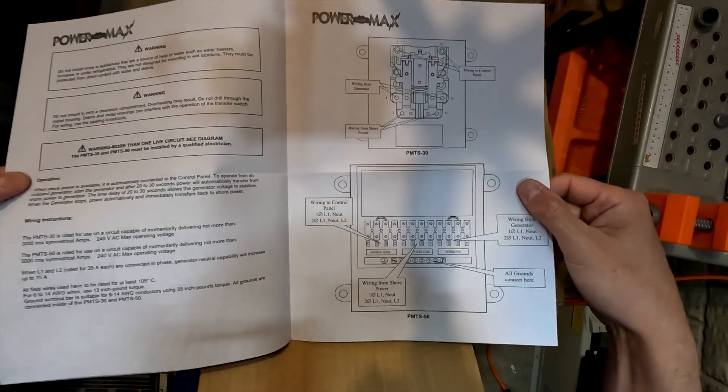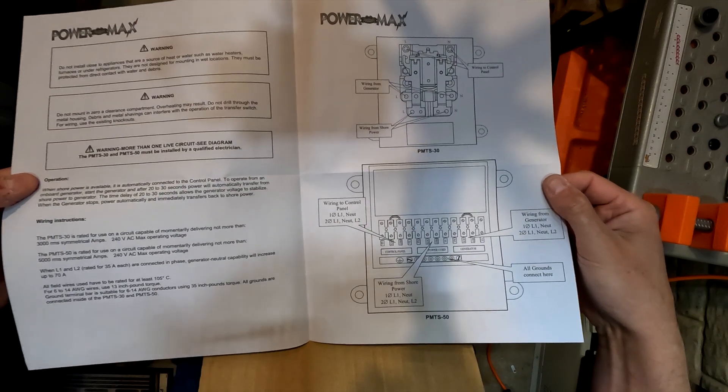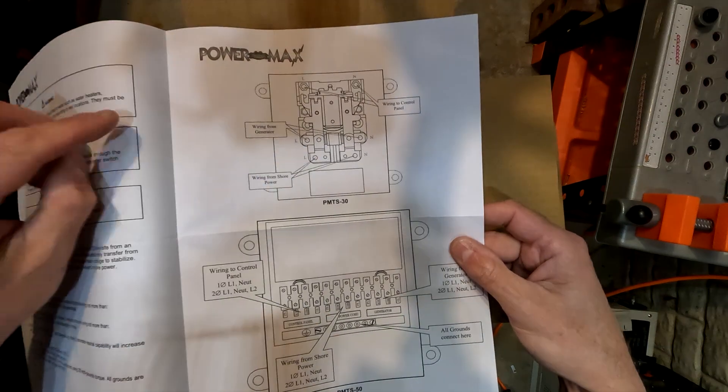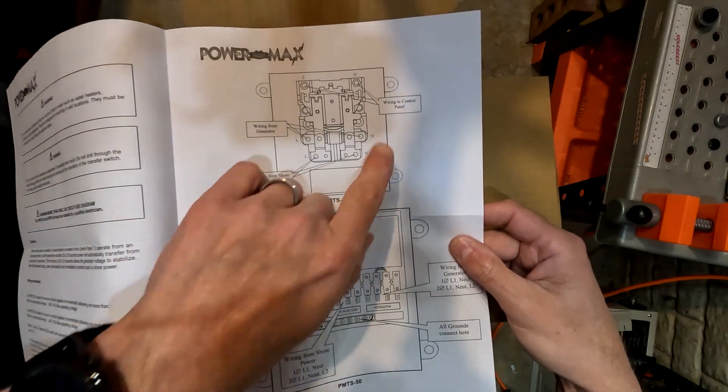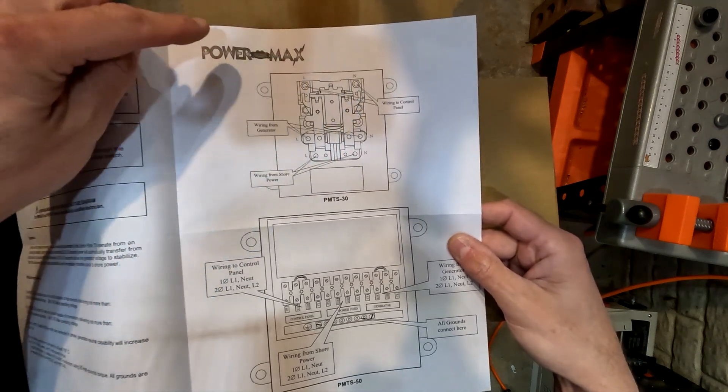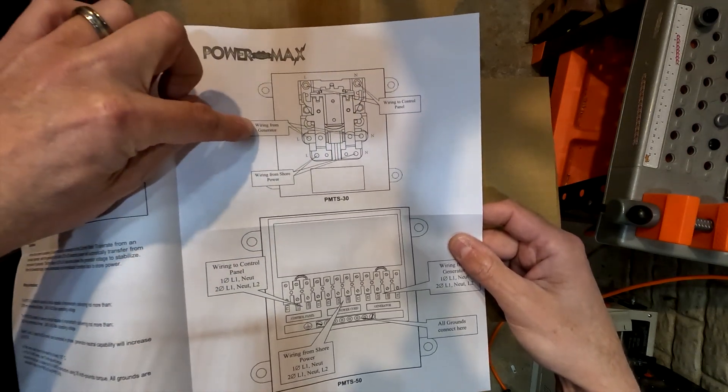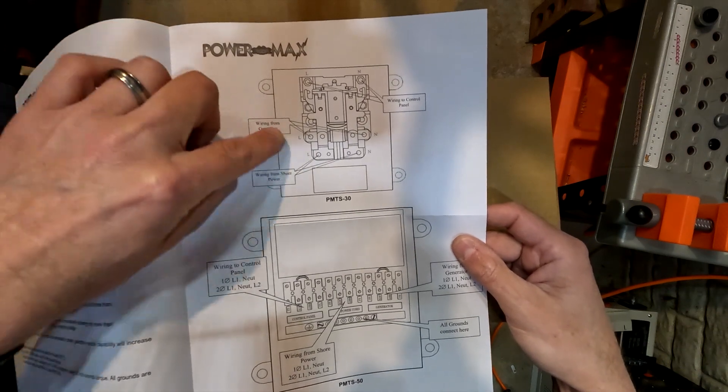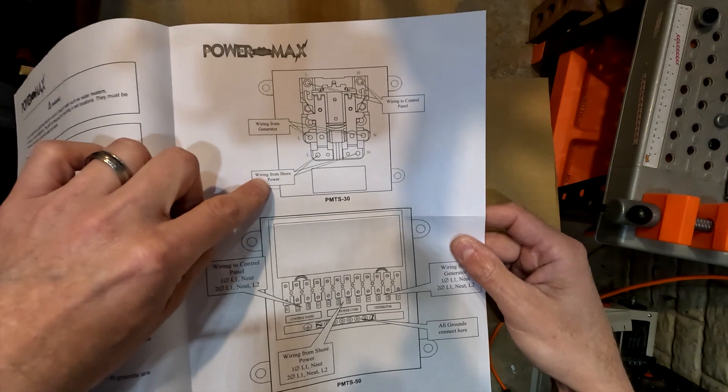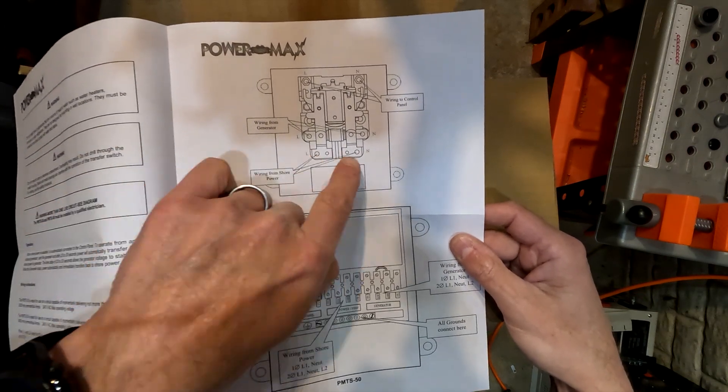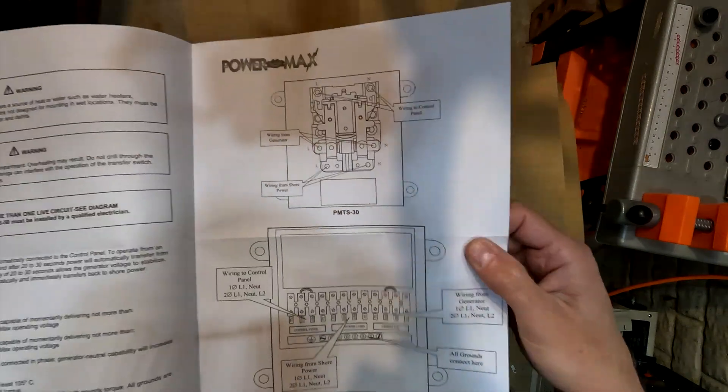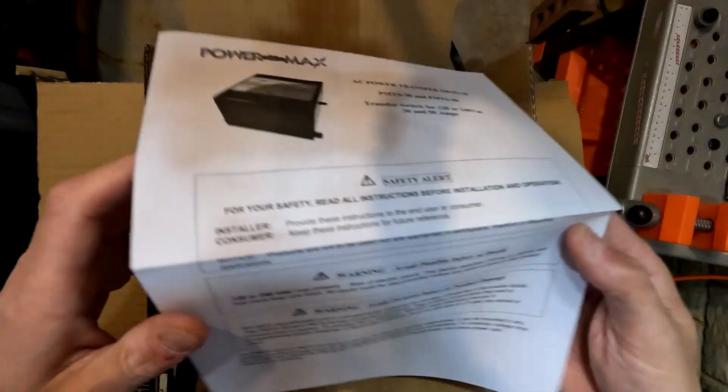We have some wiring diagrams, and the one I'm going to be paying attention to is this one right here. It looks super easy: wiring to control panel, line in neutral up here, wiring from the generator which is going to be my off-grid solar, and wiring from the shore power which is what I currently have. The wiring looks super easy. That's it, just one page.